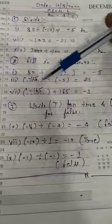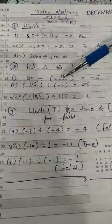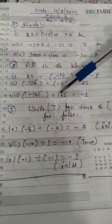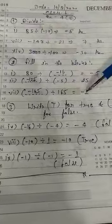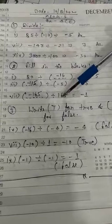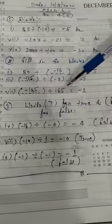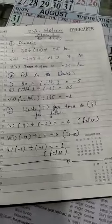Yahi 25 ho jayega. Isi tarike se next question me, humara minus 1 answer aa raha hai. To 165 se hum kis ko divide karayenge ki answer minus 1 aayega. 165 se hum minus 165 ko divide karayenge. 165 divided by 165, minus ka jayega.